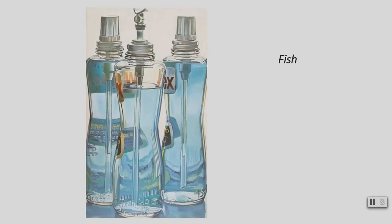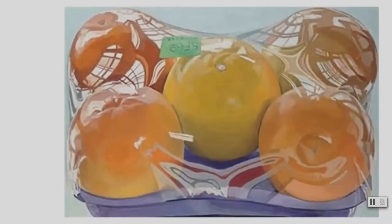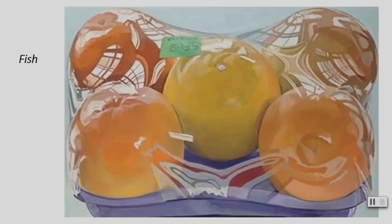This is Janet Fish — Windex Bottles. She paints how the light bounces off of reflective surfaces. This one is also oil on linen and was done in 1972. This one just seems really contemporary with all the plastic. It's called Box of Peaches and is 19 and a half by 25 and three-quarters inches, pastel on paper.